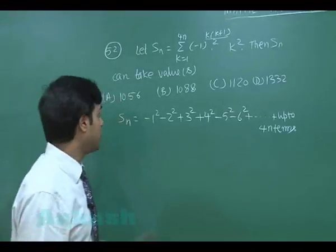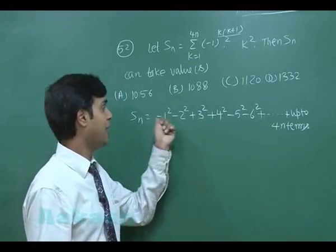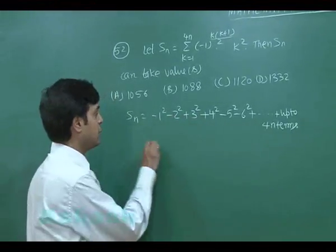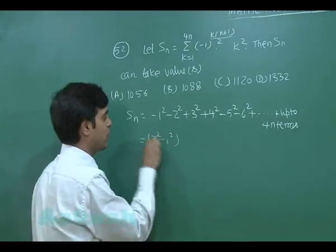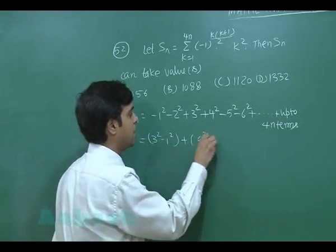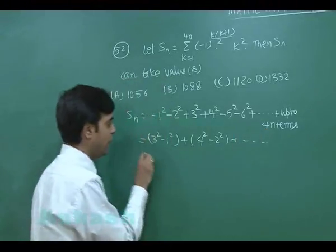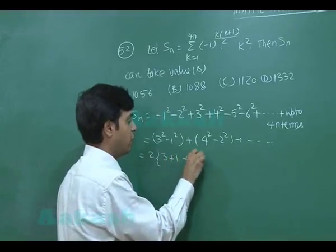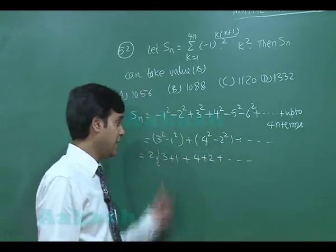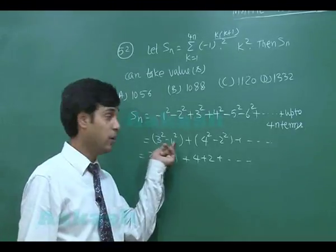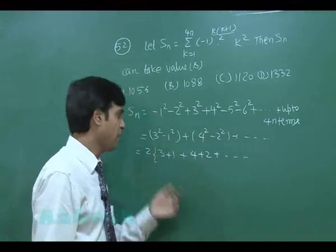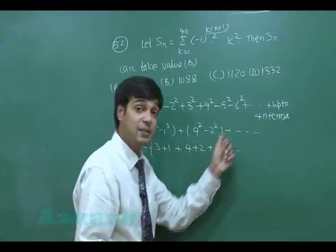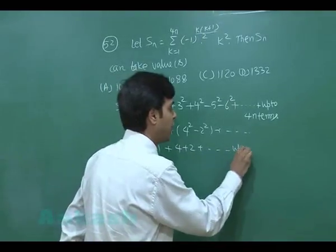Grouping in pairs: (3² − 1²) + (4² − 2²) + … Each pair simplifies as a difference of squares: (3−1)(3+1) + (4−2)(4+2) = 2×4 + 2×6 + …, factoring out 2 gives 2(4 + 6 + …) — effectively summing 4n natural numbers.